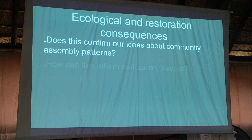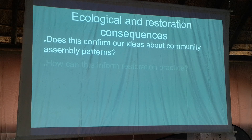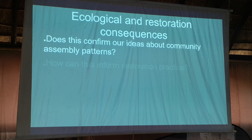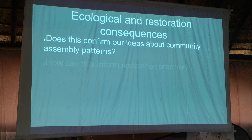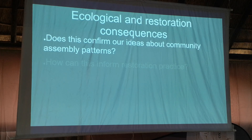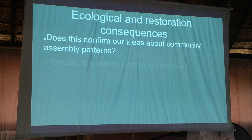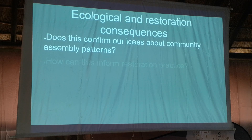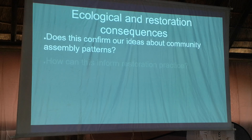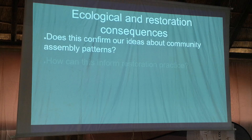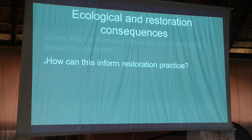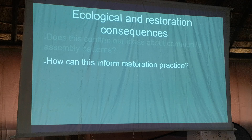Does this confirm our ideas about community structure in thicket? Does it give us insights into community assembly processes? The general idea is that we have this matrix that creates a buffer and microclimate for woody species to establish, and without that community matrix we don't have the processes to bring the trees in. Then the trees seem to push out the community once they're there - whether through competition or herbivory - because even if it's not an overstocked space, animals will still concentrate under trees since that's pretty much the only place they'll get shade.